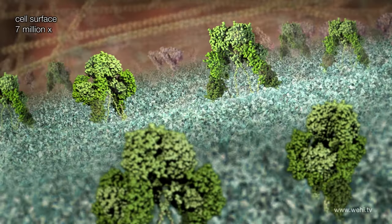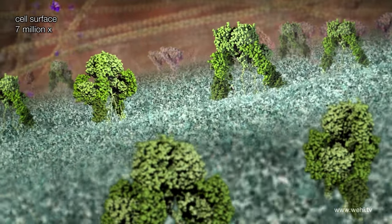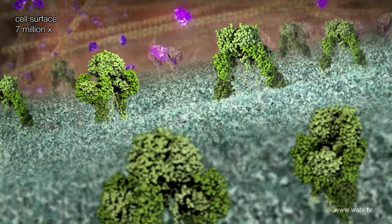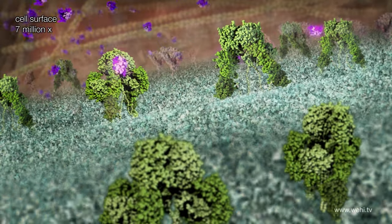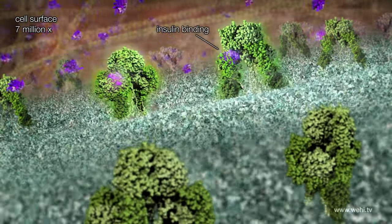The receptor itself actually spans the cell membrane so it has a part outside, a part inside, and insulin binds to the part that is outside.